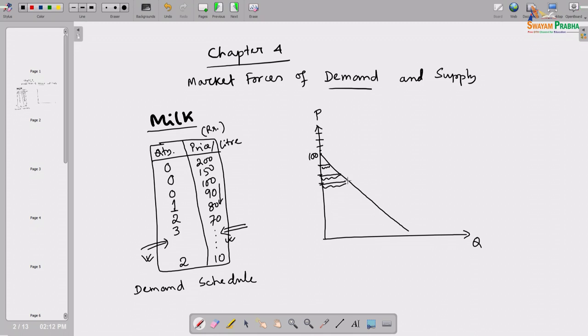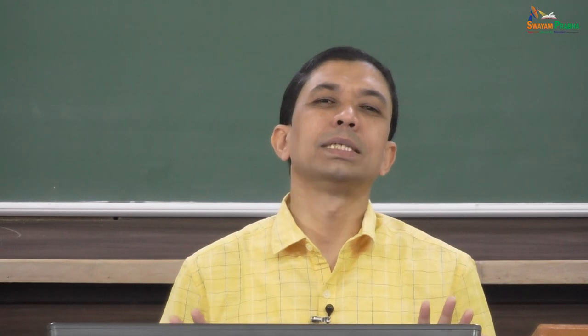The law of demand captures the behavior of potential customers in the market vis-à-vis the price of that product. It states: under the ceteris paribus condition, if the price of a commodity increases, its quantity demanded by a customer will fall, and vice versa — if price falls, quantity demanded will increase.